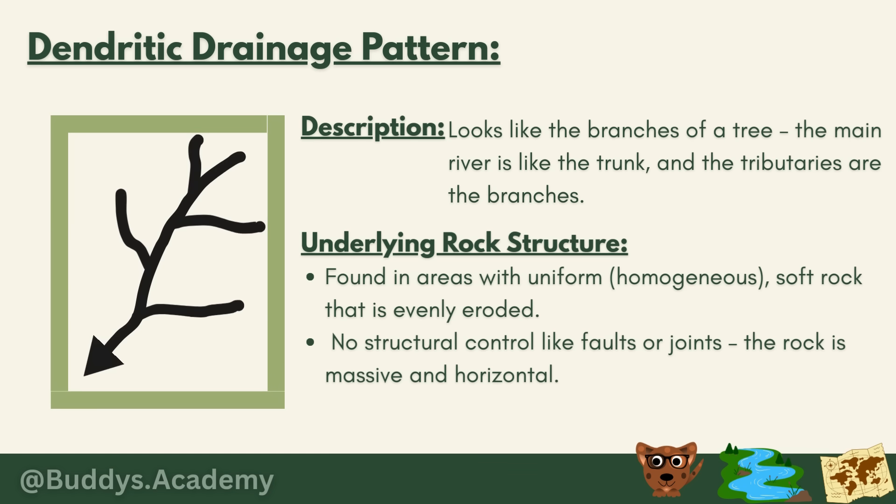Looking more closely at the dendritic pattern, the tributaries join the main river at acute angles — angles that measure less than 90 degrees. This pattern is found in areas with uniform, homogeneous soft rock that is evenly eroded, with no structural control like faults or joints. The rock is massive and horizontal — typically horizontal sedimentary and massive igneous rocks.